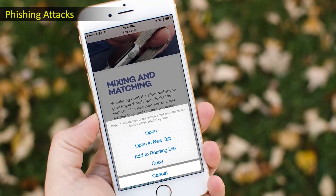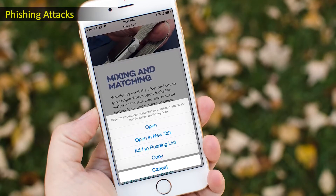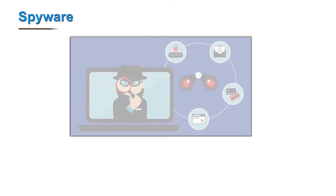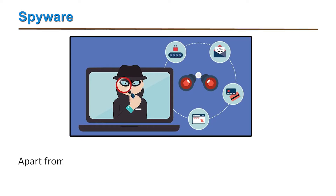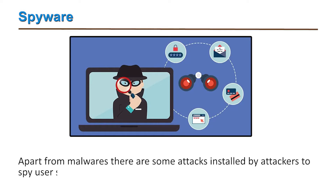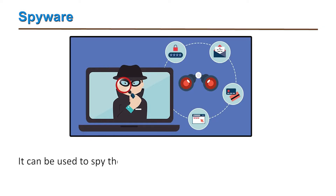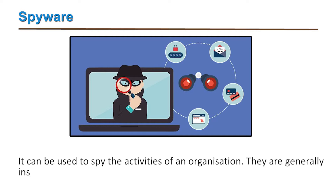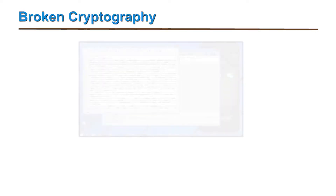Avoiding clicking on unnecessary links in mobile devices is helpful in preventing phishing attacks. The fifth threat is spyware — apart from malware, certain attacks are installed by attackers to spy on user systems. Spyware can be used to monitor the activities of an organization or an individual, and most of the time it is installed by employees or co-workers.